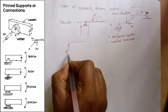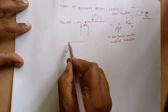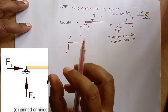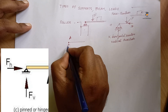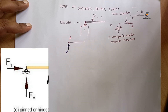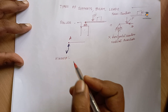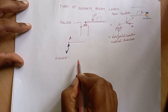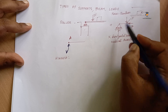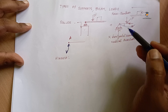For example, this is a vertical reaction V. So if it is a support condition, it is a vertical reaction — represented by the symbol V. We can rotate. In the roller support, the beam is bent, and it is allowed to bend.